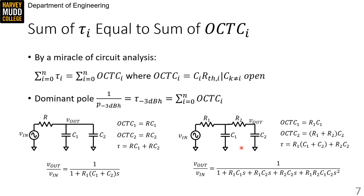The second open circuit time constant is equal to C2 times R1 plus R2. It's because C1 is an open circuit, so the only path to ground is through both of those resistors.